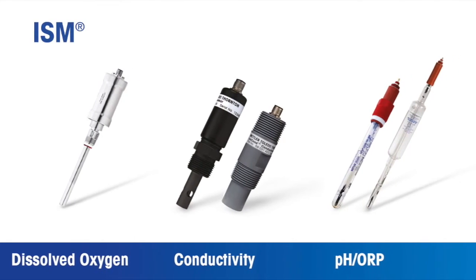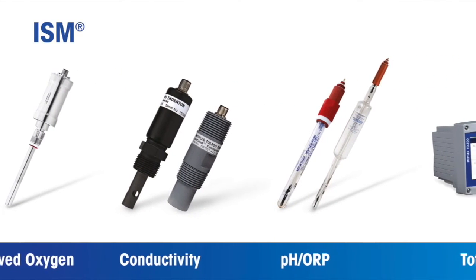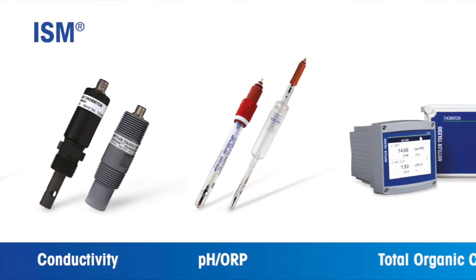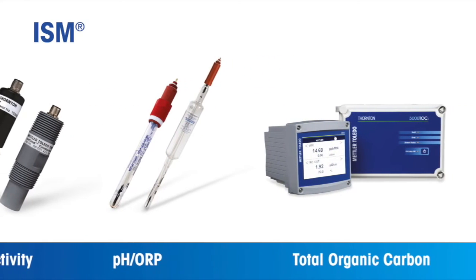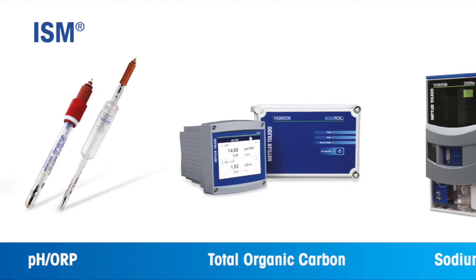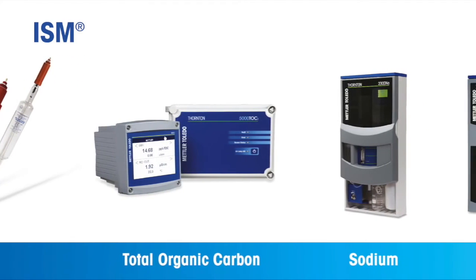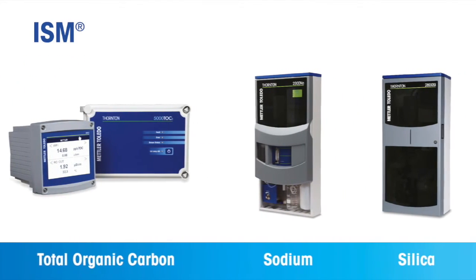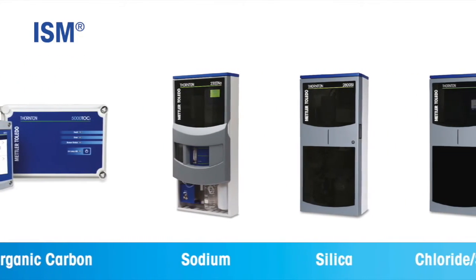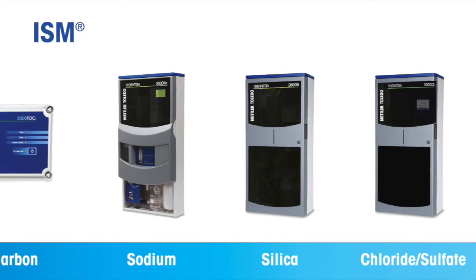For over 50 years, Mettler Toledo Thornton has offered innovative instrumentation to provide high accuracy pure water measurements. With the 3000 CS Analyzer, we continue to help power plant personnel monitor water cycle chemistry effectively and efficiently.